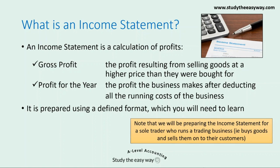Please note that the income statement for a limited company is slightly different to the one that we'll be looking at here. So what is an income statement? It's a calculation of profits — firstly, gross profit, which is the profit that results from selling goods at a higher price than they were bought for; and secondly, profit for the year, which is the profit the business makes after deducting all the running costs. It's prepared using a very specific, defined format, which you will need to learn and I'll explain it in this video.